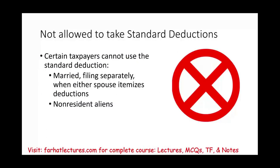Standard deductions are not allowed for certain taxpayers. If you are married filing separately and one spouse itemizes, the other must also itemize — they cannot take the standard deduction. Also, non-resident aliens cannot take standard deductions because those are given by the U.S. government to citizens and resident aliens.